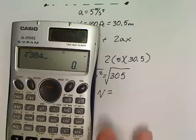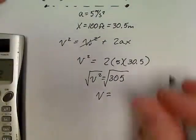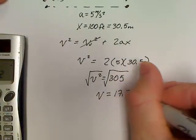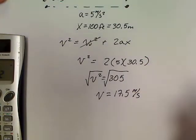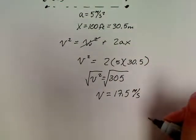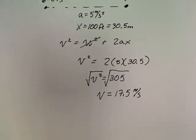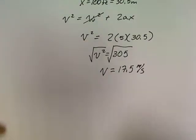So, V is equal to the square root of 305. I cannot type and look at a computer at the same time. 17.5. So, there's your final velocity at 17.5 meters per second. Let's take a look at the next problem we got.